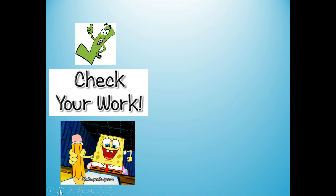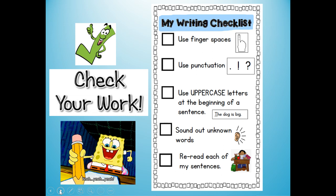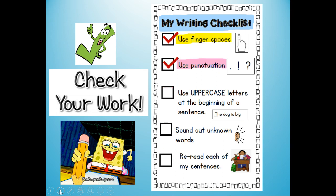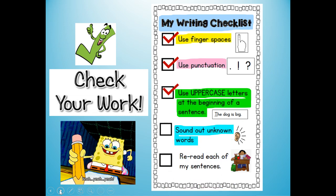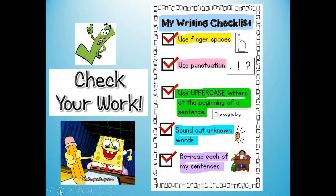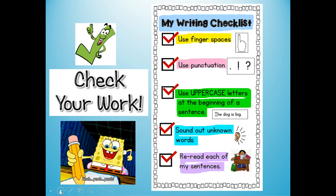Now I want you to look at each of your four sentences and check your work with this writing checklist. Did you use finger spaces between your words? Did you use punctuation at the end of each of your sentences? Did you use uppercase letters or capital letters at the beginning of your sentence — each of your four sentences? Did you sound out any unknown words you didn't already know how to spell? And my favorite: did you reread each of your sentences to make sure that you didn't leave out a word and that they make sense? If you need to, you can push pause and check each of your four sentences with this writing checklist. When you're done, push play.